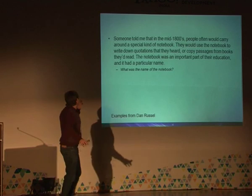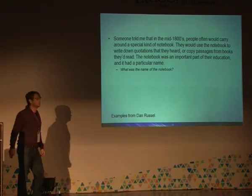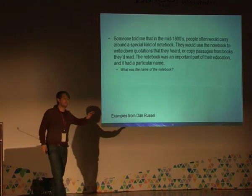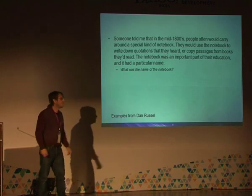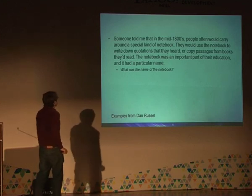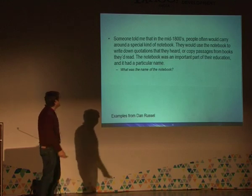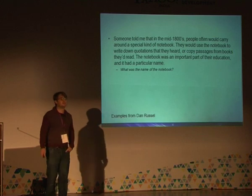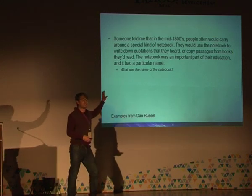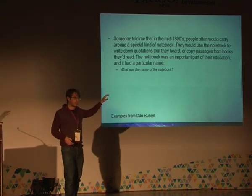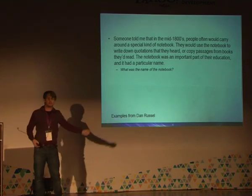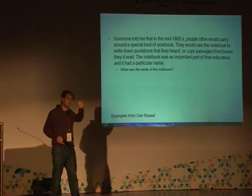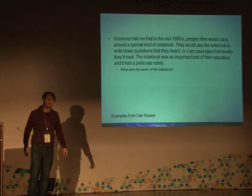Dan Russell, a search experience VP at Google, has amazing slides that make you think about the search process itself. One example: 'In the mid-1800s, people carried a special kind of notebook to write down quotations or copy passages from books. It had a particular name — what was it?' This is interesting because you're entering into somebody else's information need space, trying to understand what they were looking for and how you would formulate a query for it.